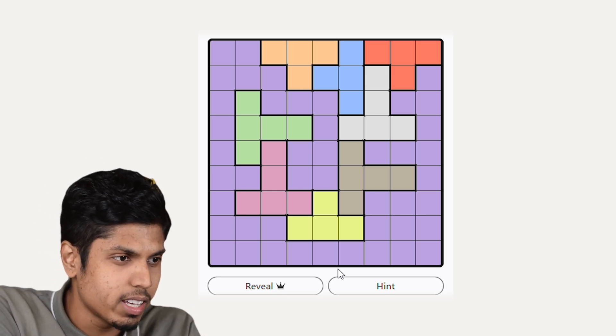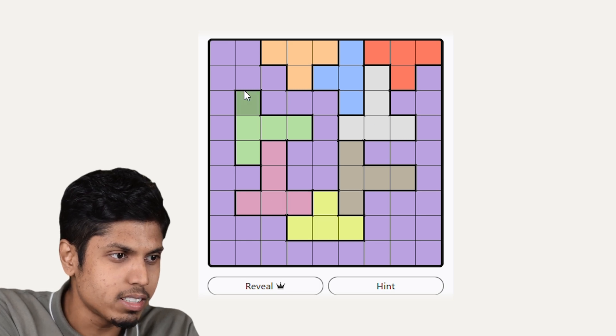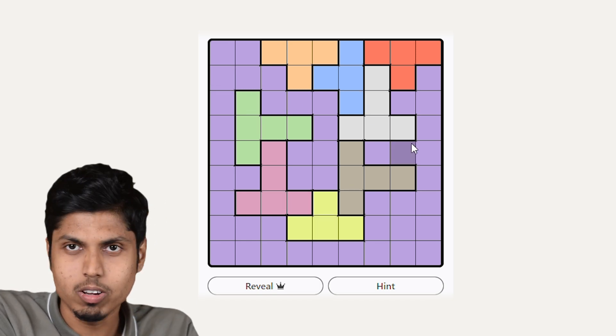As you can see, here we have 1, 2, 3, 4, 5, 6, 7, 8, 9 colors, 9 rows and 9 columns.